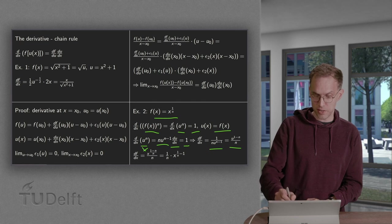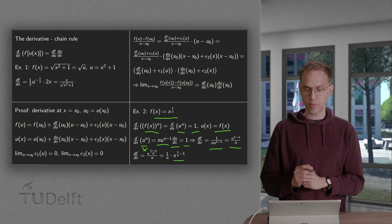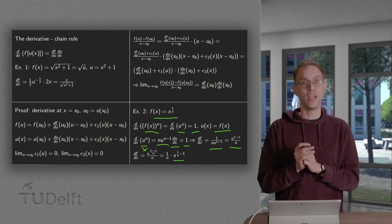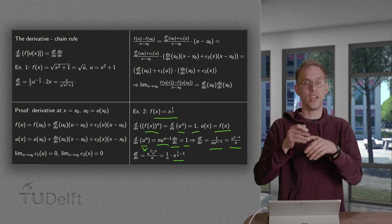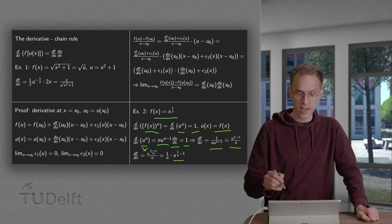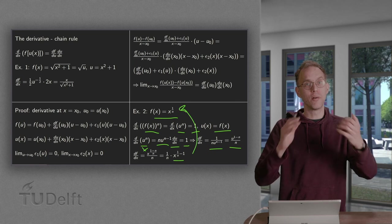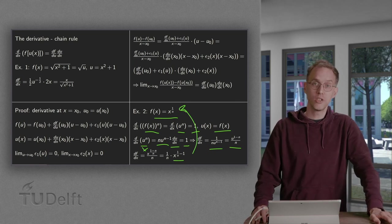And if you simplify a bit you get 1 over n times x to the power 1 over n minus 1. So you see that this general rule which holds for integers like if you have x cube you get 3 times x squared. This general rule holds also for fractional powers and we use a chain rule here to prove it.